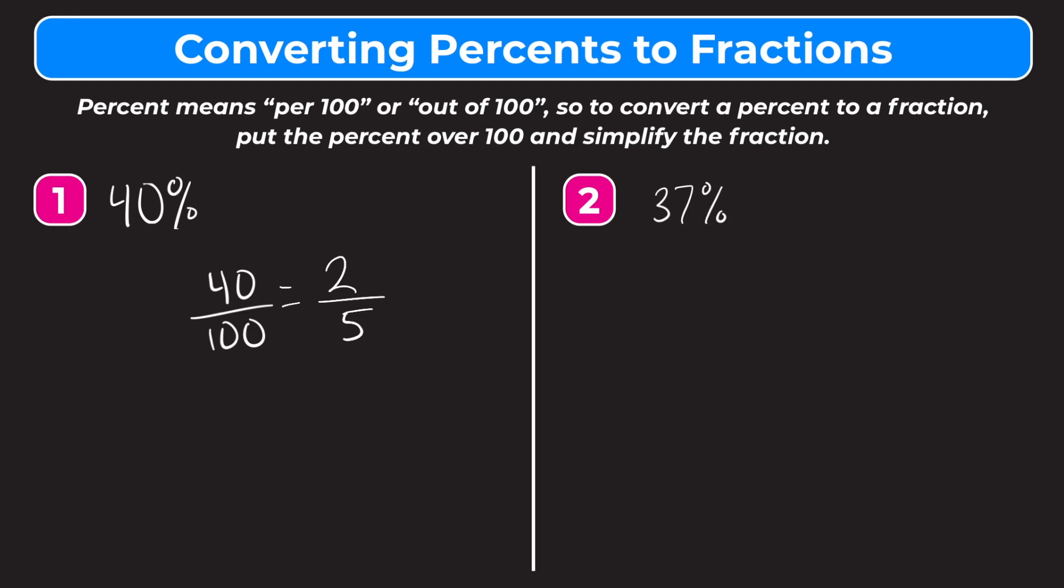Let's try number two. We have 37%, so again we do our first step: put 37 over 100. Now our second step would be to simplify the fraction. 37 and 100 don't have any common factors besides one, so this fraction is in its simplest form. The answer: 37% written as a fraction is just 37/100.